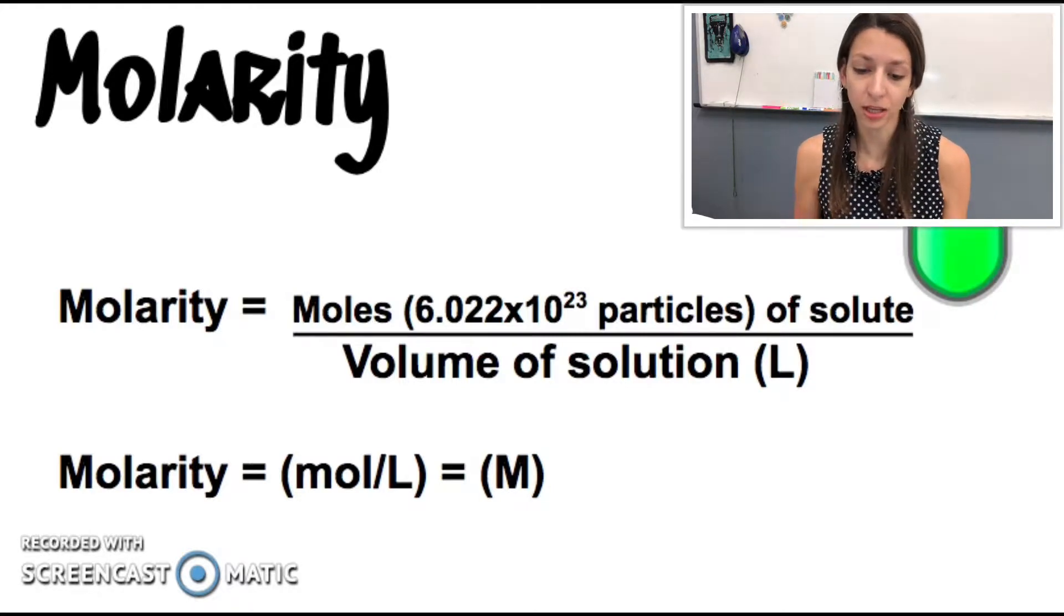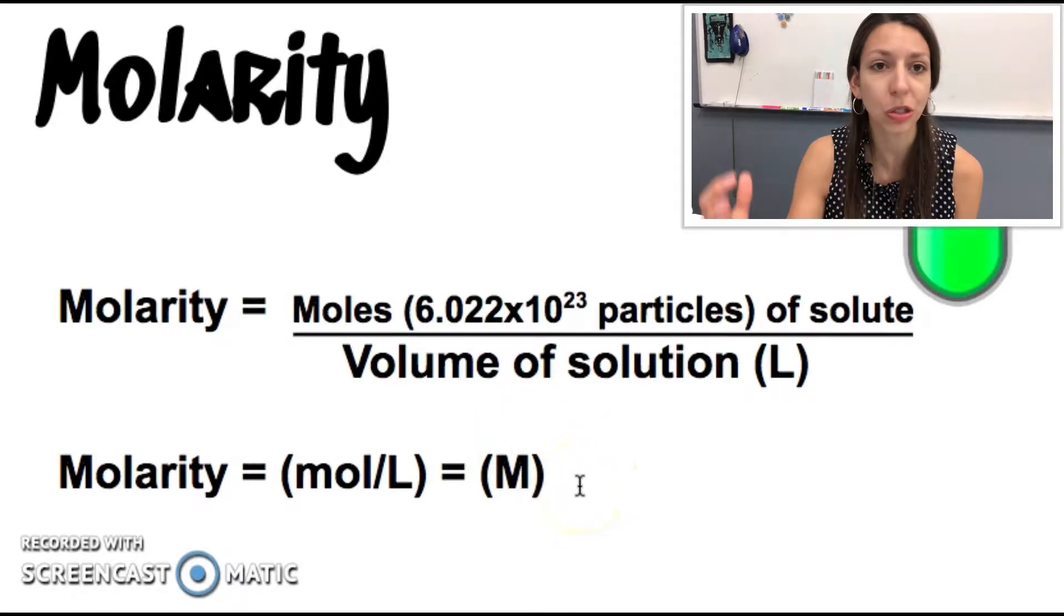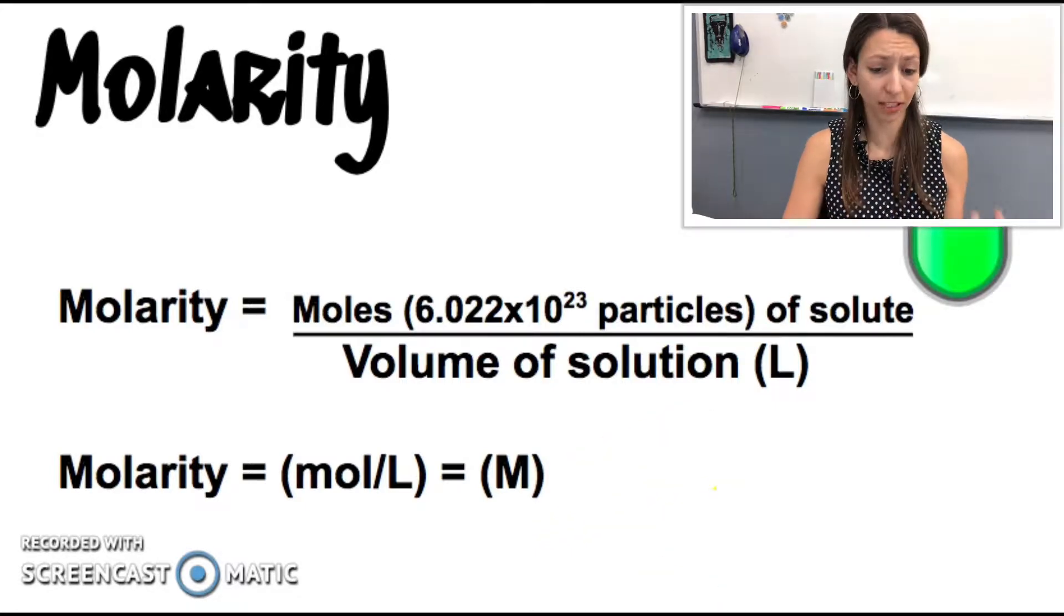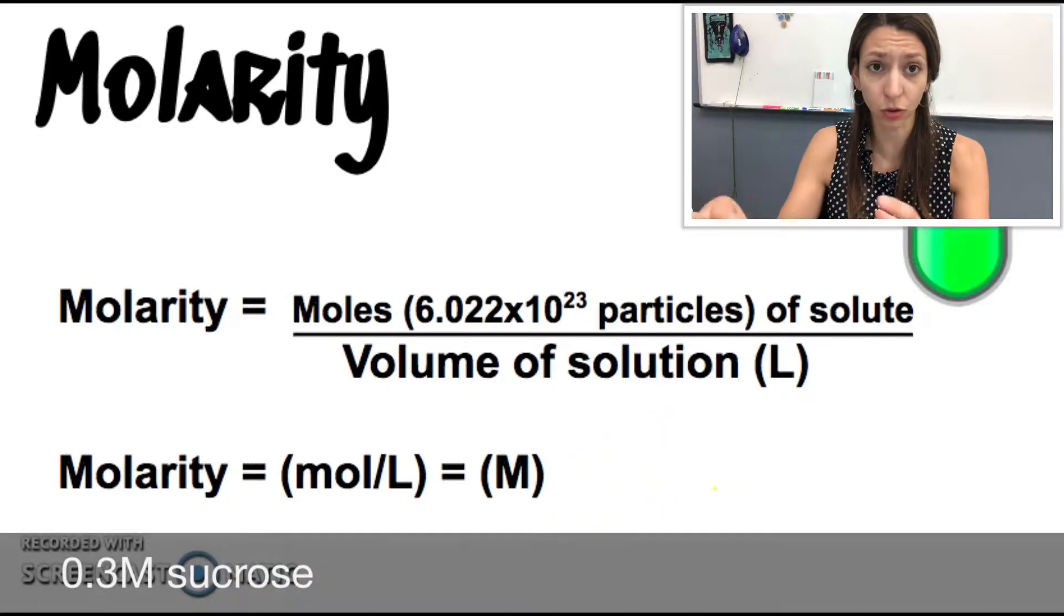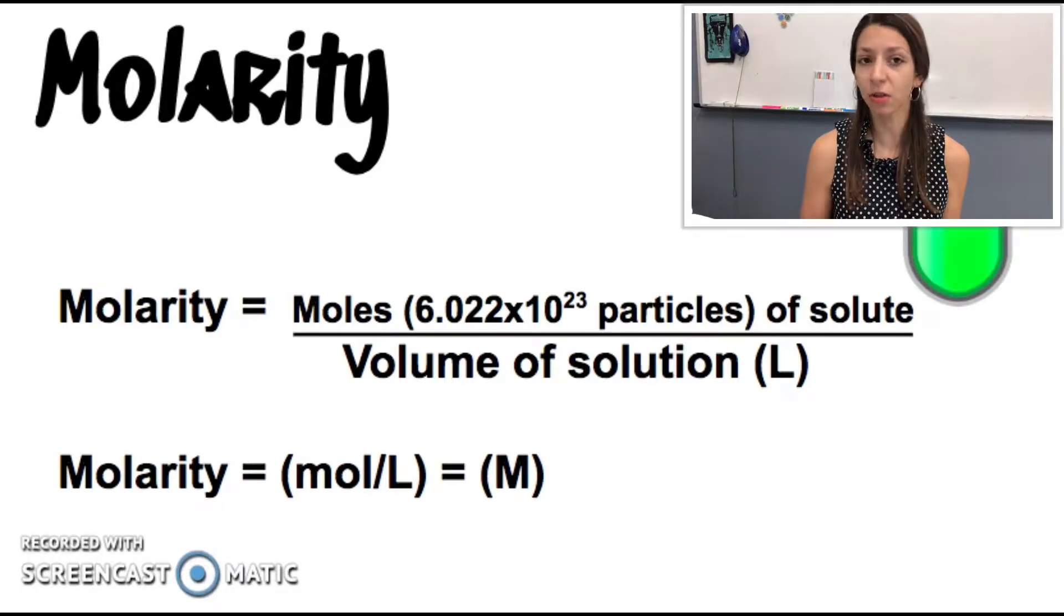And when molarity is reported, this big M symbol is read as molar. So if we have 0.2 molar, it would be 0.2 big M. Same thing as moles per liter. So for example, we have 0.3 big M sucrose. That is read as 0.3 molar sucrose solution.